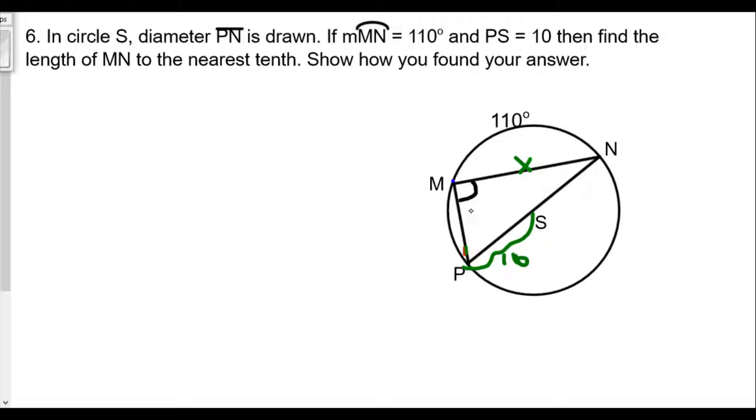Then we also know that the measure of arc MN is 110 degrees, one half of that will be 55 degrees. So we know the measure of angle MPN is 55 degrees.